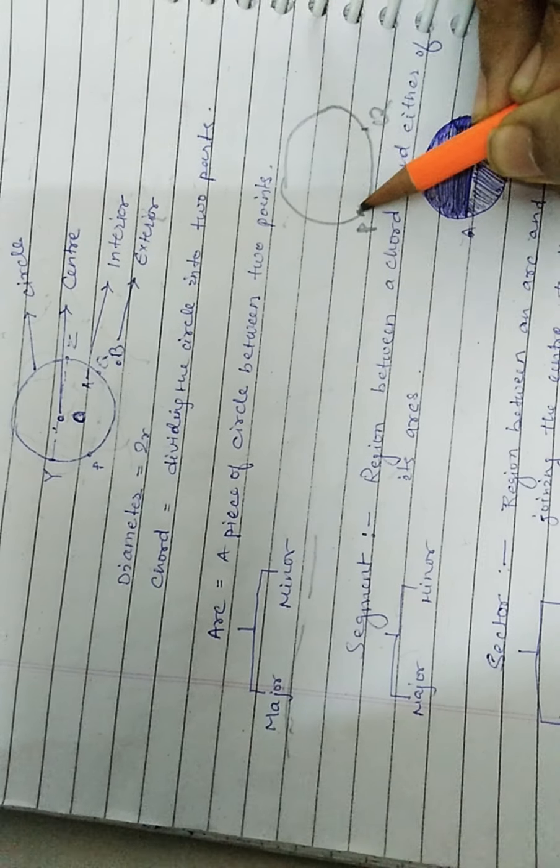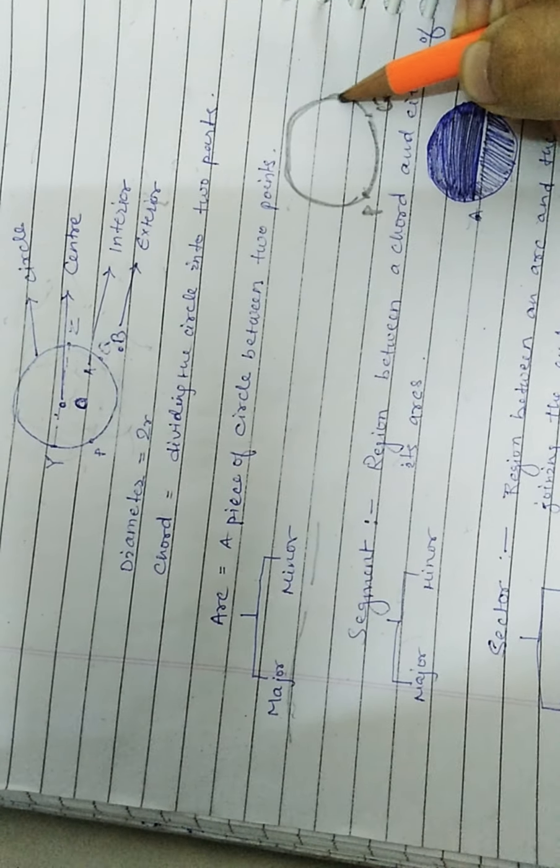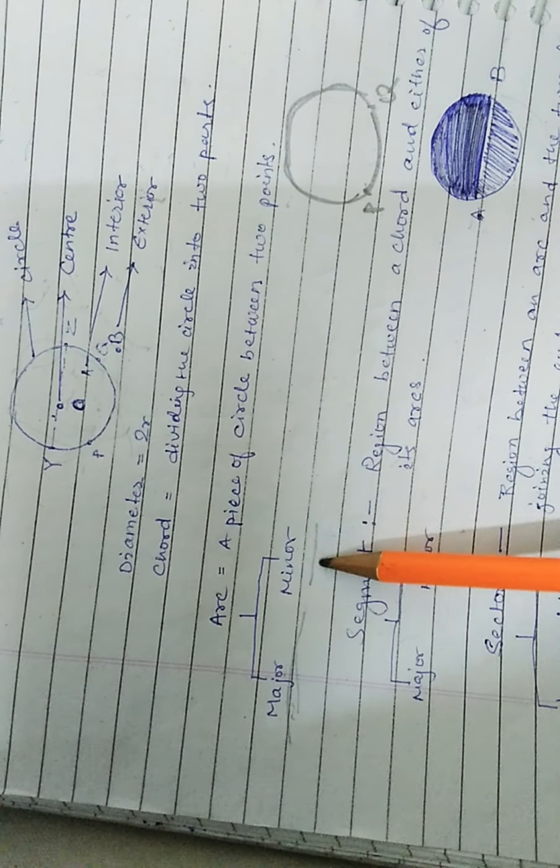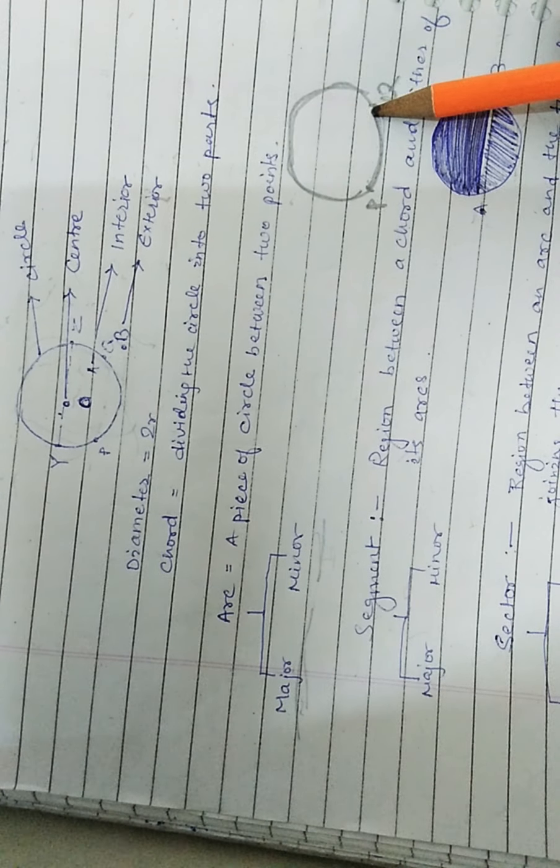There are two types of arc: the major arc and the minor arc. The smaller one is known as the minor arc and the largest one is known as the major arc.